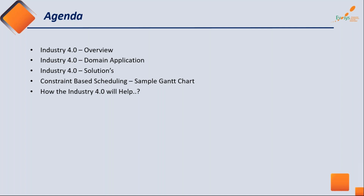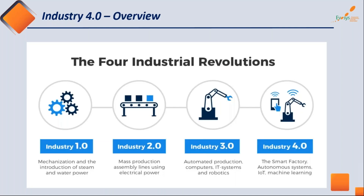As an overview, I will take you through the different versions. It started in the late 18th century with the introduction of steam and water power into industry to produce and manufacture things. That was defined as Industry 1.0, which evolved over a number of decades.